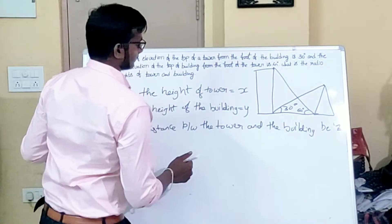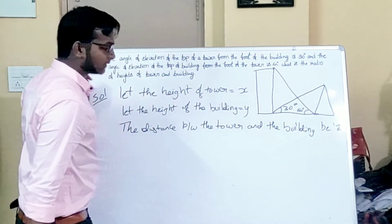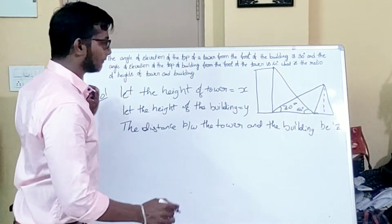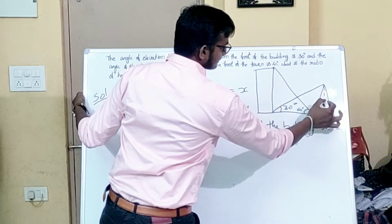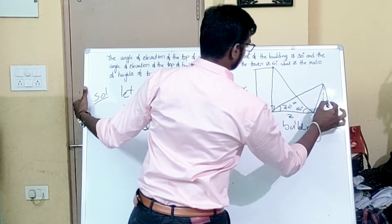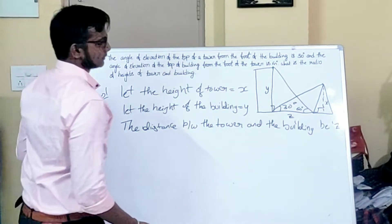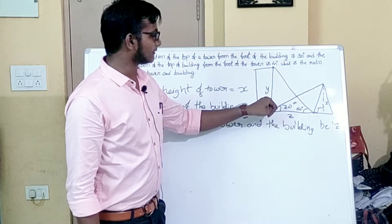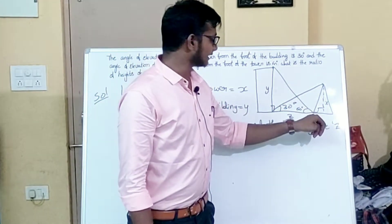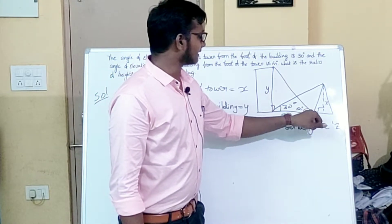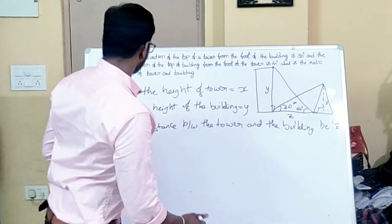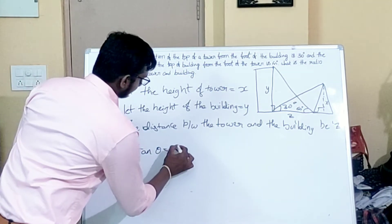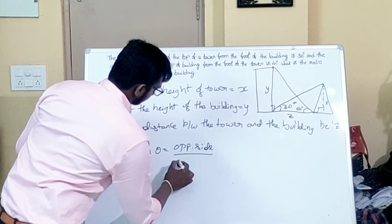So 30 degrees is the angle of elevation of the tower from the foot of the building, and 60 degrees is the angle of elevation of the building from the foot of the tower. The height of the tower is x. We need to establish the relation between the height of the tower, the height of the building, and the distance z between them. We know that tan θ equals the opposite side divided by the adjacent side.